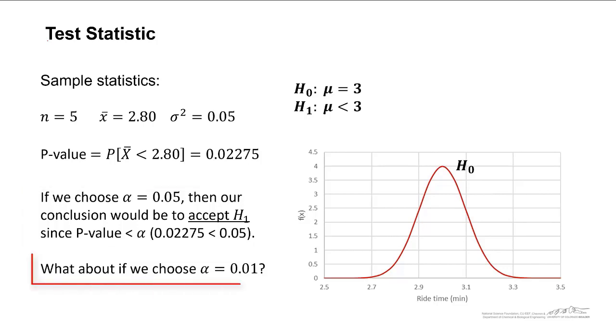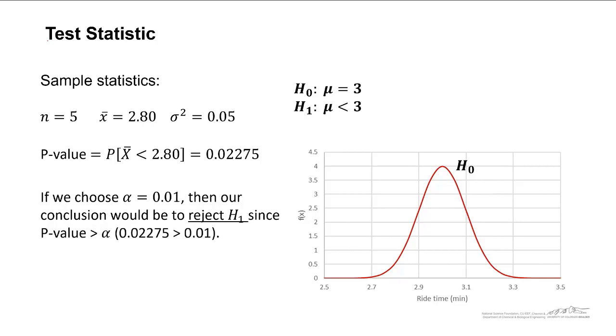What about if we chose alpha to equal 0.01? Would we accept or reject the alternate hypothesis? In this case, if alpha equals 0.01, then our conclusion would be to reject the alternate hypothesis, since 0.02275 is greater than 0.01.